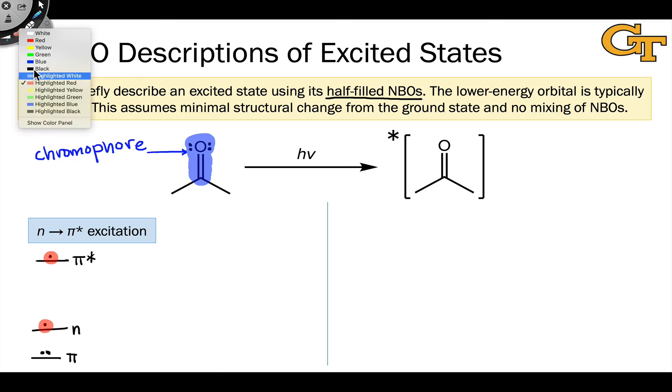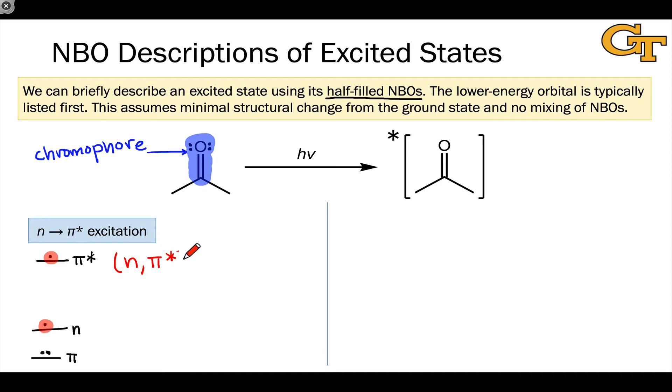To emphasize that the business is really occurring where these n and π* orbitals are located, we use this notation where the SOMOs are listed inside parentheses, typically with the lower energy SOMO first. So the n orbital is listed first and the π* orbital is listed next as (n, π*).